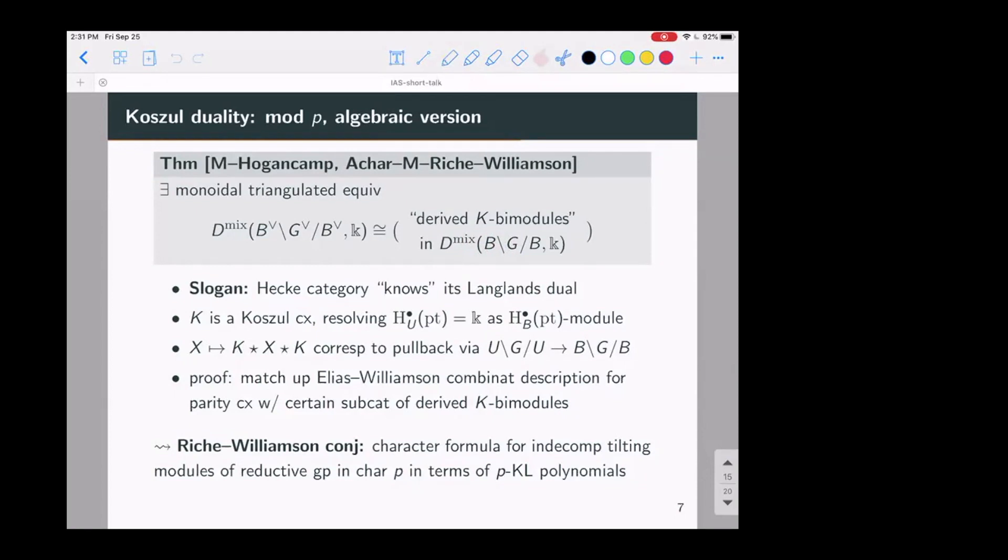So the theorem in this form is actually not in the literature yet. That's in work in preparation of myself and Matt Hogancamp. But this builds on earlier work, joint work with Achar, Reich, and Williamson. And in those papers, we use this combined with many other advances in modular representation theory to prove the Reich-Williamson conjecture on character formula for indecomposable tilting modules and reductive groups. So this really does imply some deep facts in representation theory, modular representation theory.